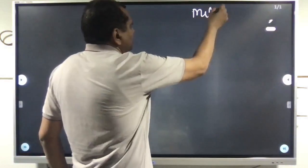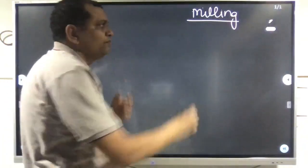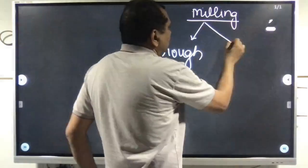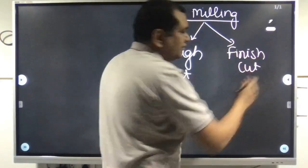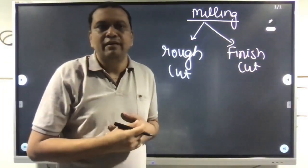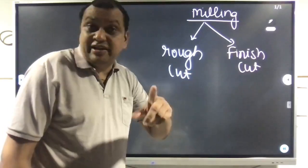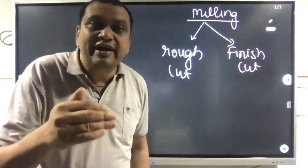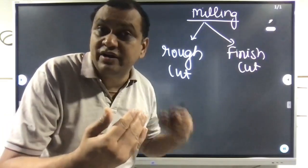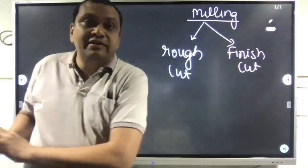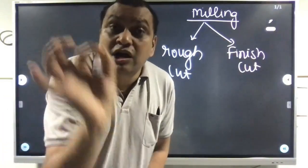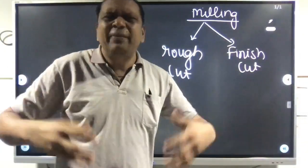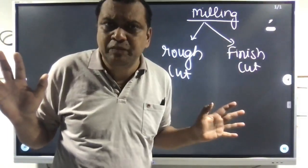There are two types of cut: one is called rough cut and another is a finished cut. In the rough cut, we are not worried about surface finish. So as soon as the machining is over, I would like to withdraw my cutter. Quite possibly at the time of withdrawing, the cutter may be in contact with the work, so surface finish will be spoiled. But anyway, we are not worried about the surface finish — we just want to do machining.